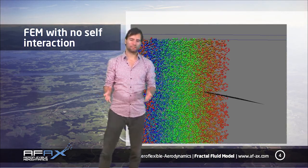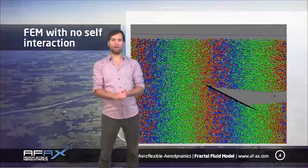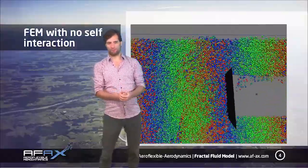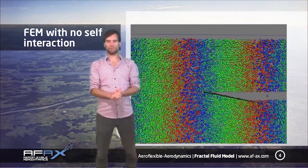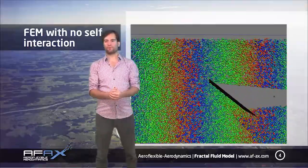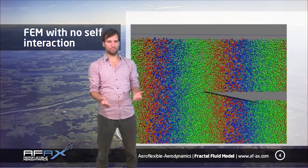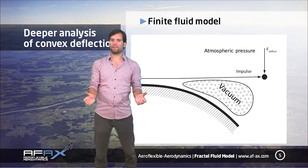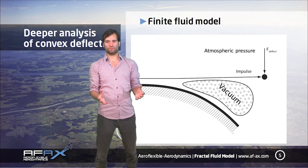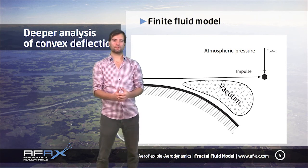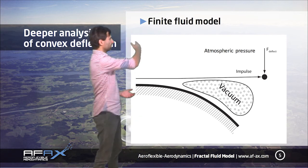First we start with elements that have no interaction with each other at all. Only wall collisions and obstacle collisions are allowed. What we first see is that our simplified wing in the shape of a simple plate creates a wind shadow with a vacuum in it. The vacuum is an area where the finite elements experience no opposing force, so all force on the particles would come from the free stream around, which is the area where the particles move.